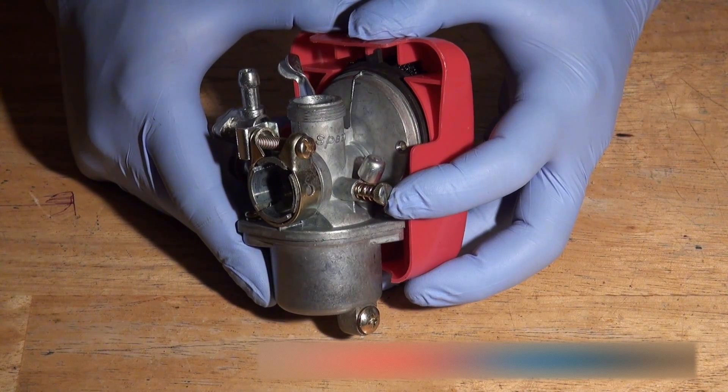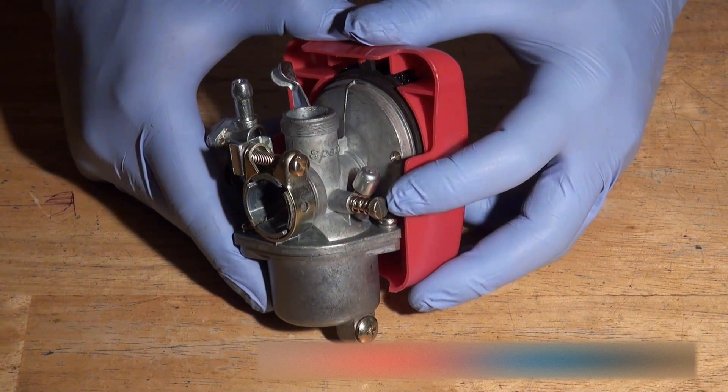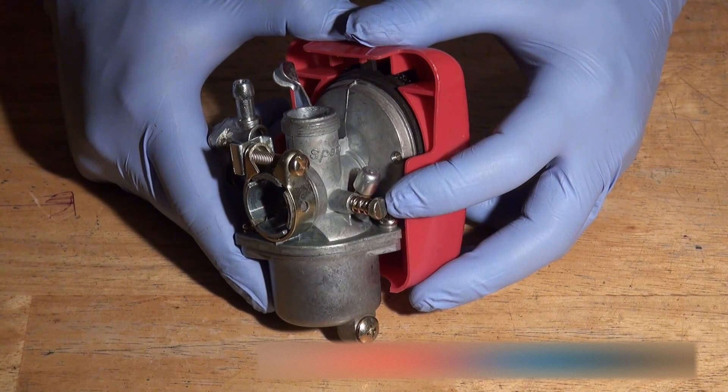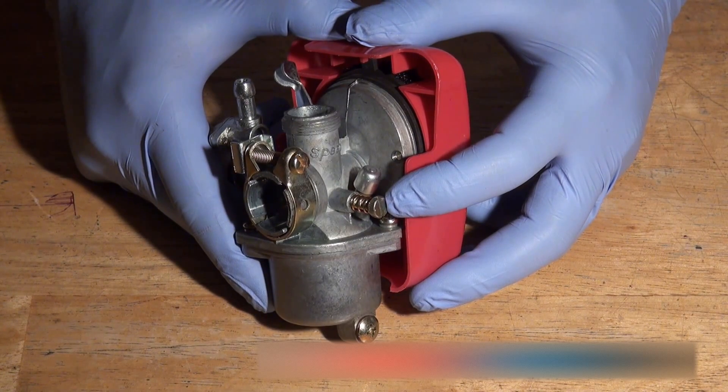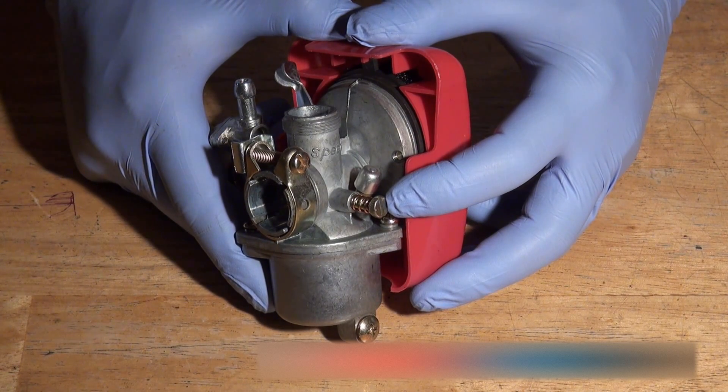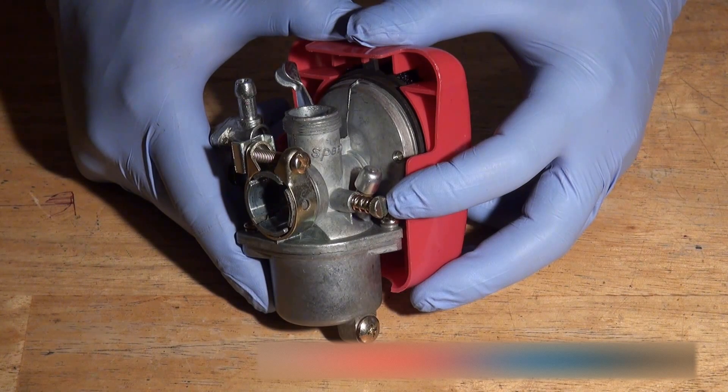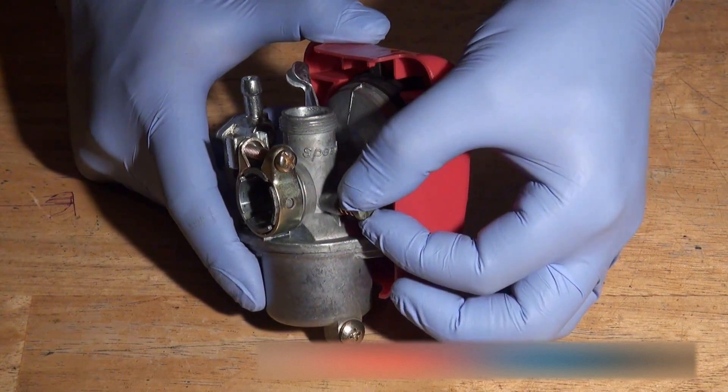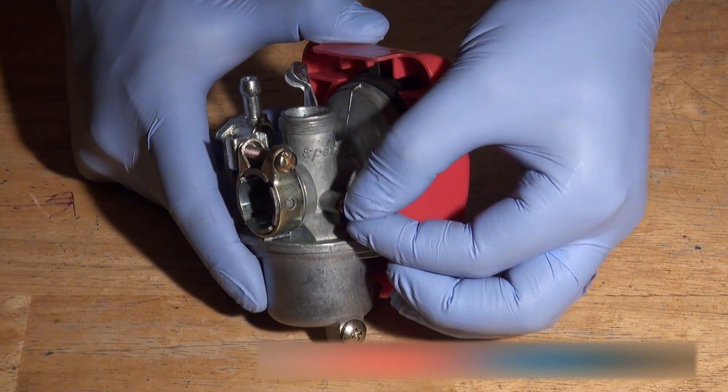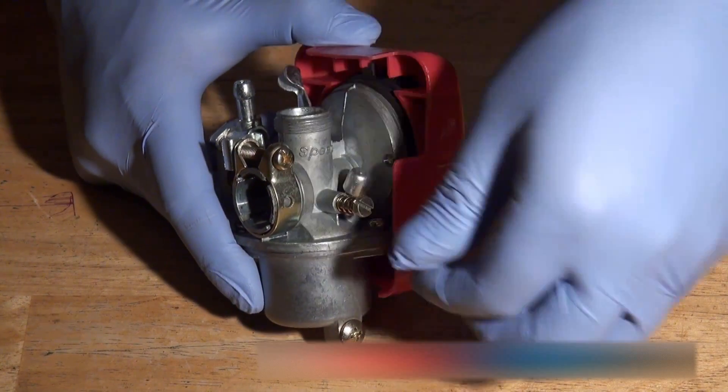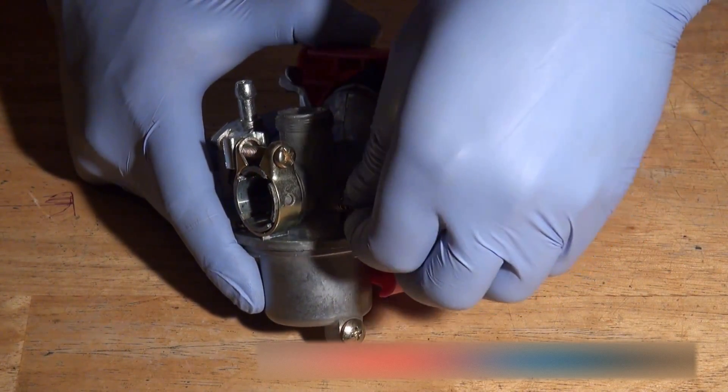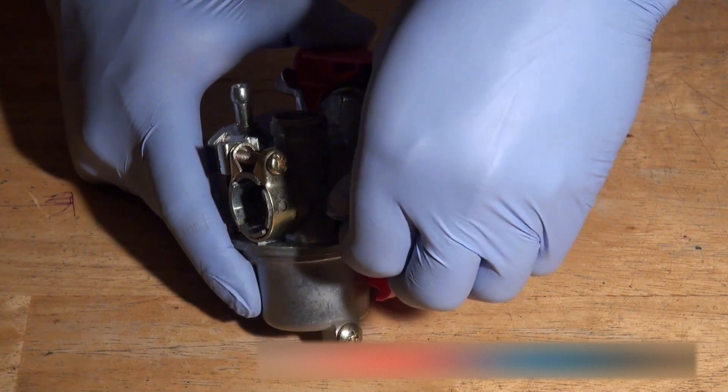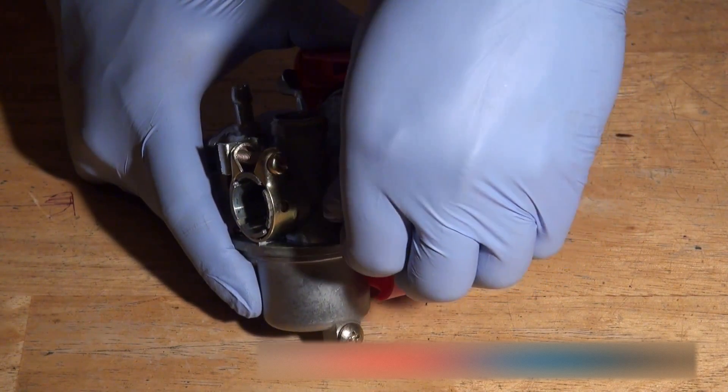Now the manufacturers state that this screw here should be three and a half turns to four and a half turns from the completely closed position counter-clockwise. So if you can imagine us screwing this in as far as it will go, and we're screwing it in in the clockwise direction.